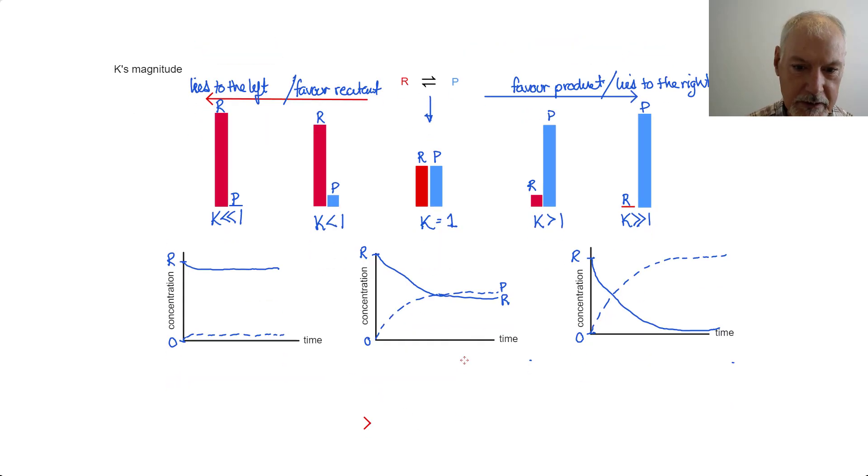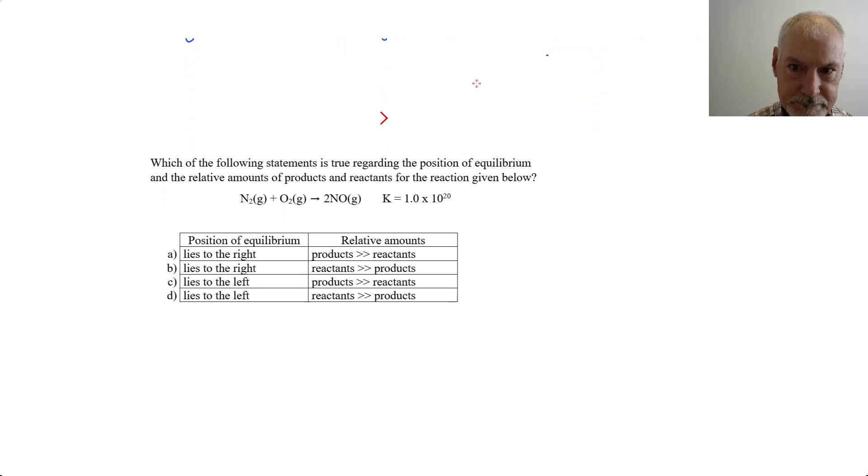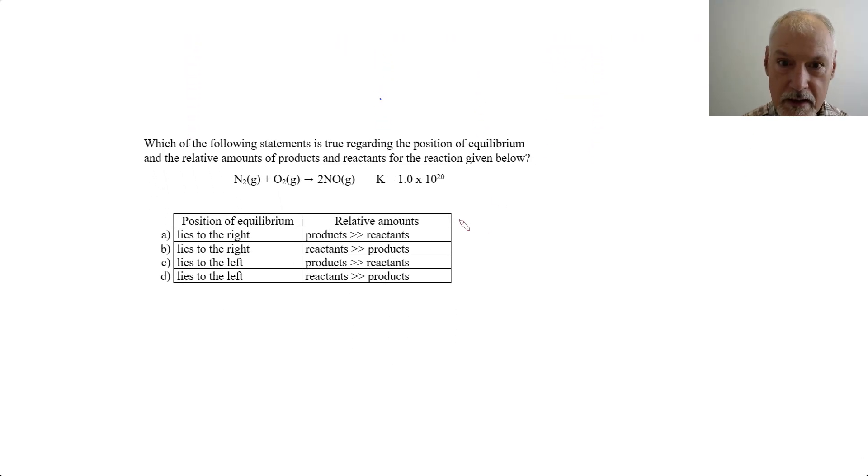Let's apply this now to the following question. Here we have a particular reaction, and we're told that the equilibrium constant is 10 to the 20th. That's a situation where our constant is much, much greater than one, which favors product.